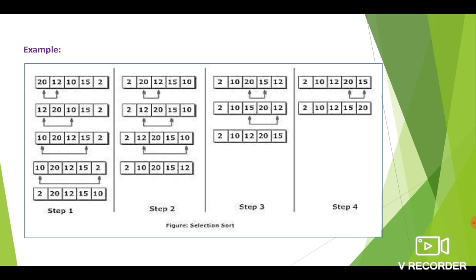After the first iteration, the array becomes 2, 20, 12, 15, 10. In the second pass, you have to take the second element. The second element selected is 20. It is compared with the third element. If they are not in order, you have to swap.